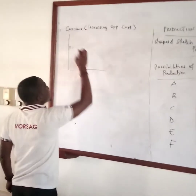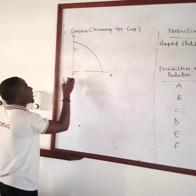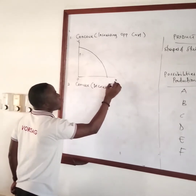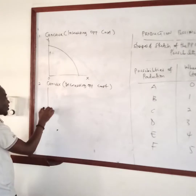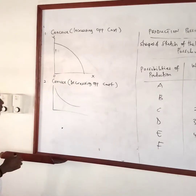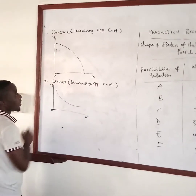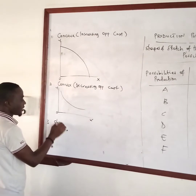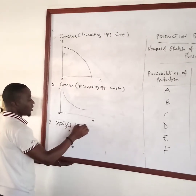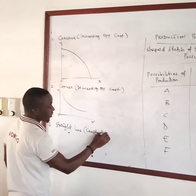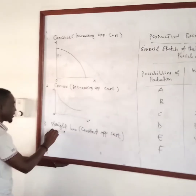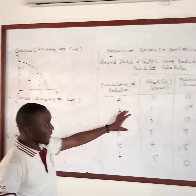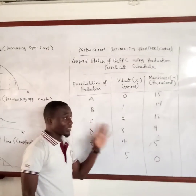So you have this curve that is concave. The second one is the convex — it is convex to the origin, depicting a decreasing opportunity cost. This is drawn with our x-axis, our y-axis, and our origin. Then the third one is just a straight line, a downward sloping curve, which shows a constant opportunity cost, drawn as a straight line from the y-axis to the x-axis.